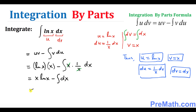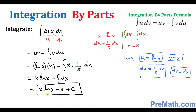So our complete answer is going to be x·natural log of x minus x, plus C as an arbitrary constant. And that is our complete answer. Thanks for watching and please subscribe to my channel for more exciting videos.